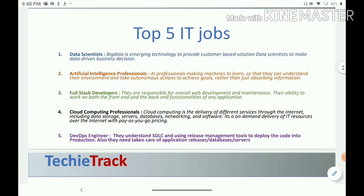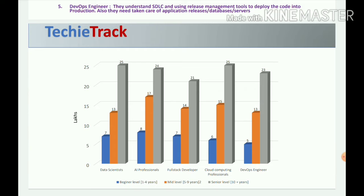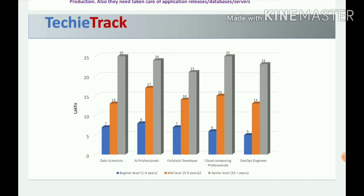Now let's see the salary for Data Scientists. I have sorted three levels: if the developer is a beginner with one to four years of experience, the starting package is 7 lakhs to 12 lakhs per annum. If the experience grows to five to nine years, they will get 13 lakhs. If experience is 10-plus years, they will get 25 lakhs per annum.